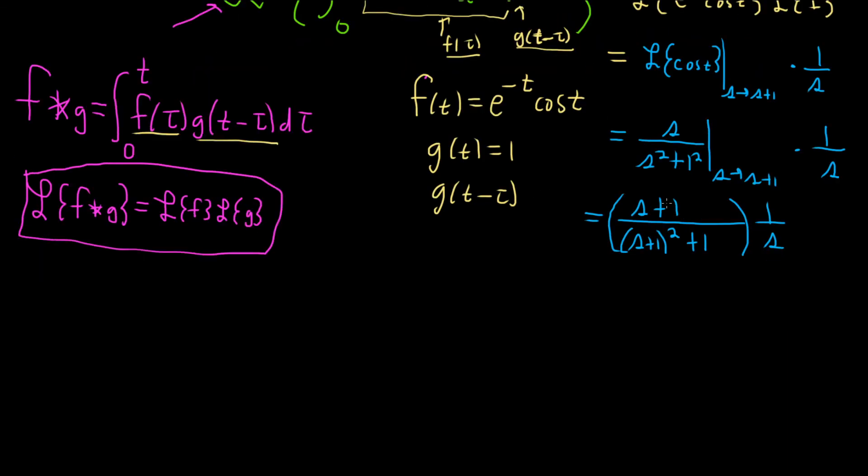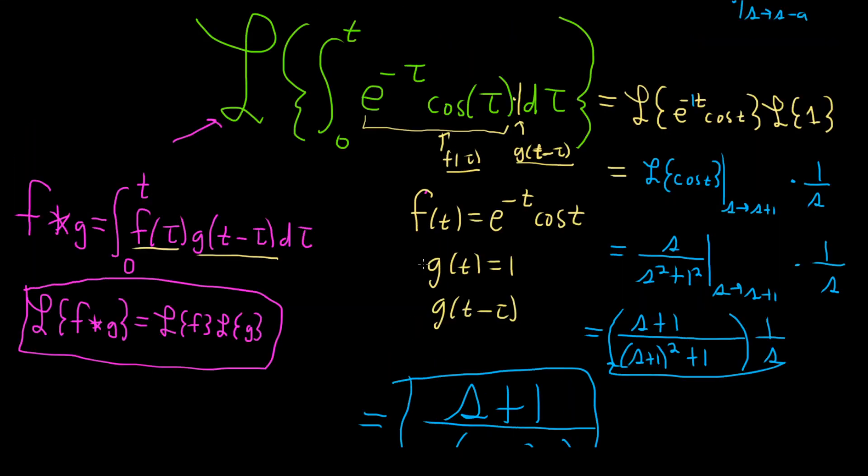Distributing across the top we'll just get s plus one, and then on the bottom I'm going to write it like this: s times parentheses s plus one squared plus one. Just take this s and put it out here and add some extra parentheses. And that would be the Laplace transform of this definite integral which is a convolution.